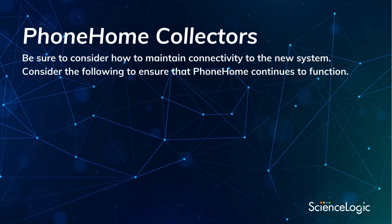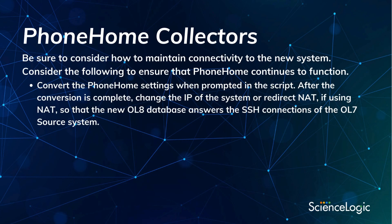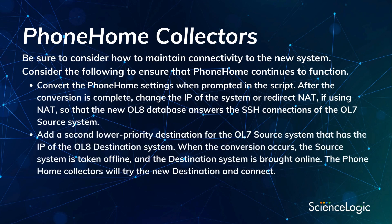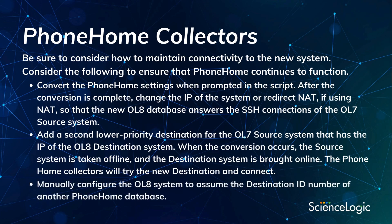Phone home collector considerations: when converting a system with phone home, be sure to consider how to maintain connectivity to the new system. Consider the following methods: convert the phone home settings when prompted in the script; after the conversion is completed, change the IP of the system or redirect NAT so that the new OL8 database answers the SSH connections of the OL7 source system; add a second lower priority destination for the OL7 source system with the IP of the OL8 destination system — when the conversion occurs, the source system is taken offline and the destination system is brought online, so phone home collectors will try the new destination and connect; or manually configure the OL8 system to assume the destination ID number of another phone home database.